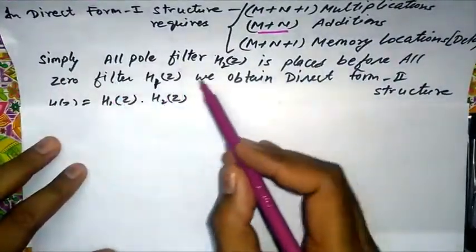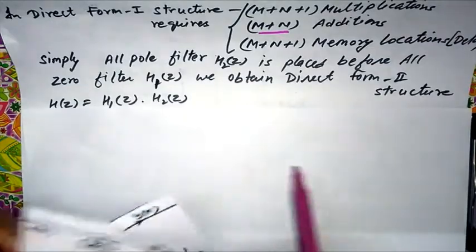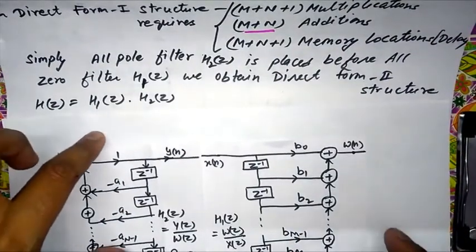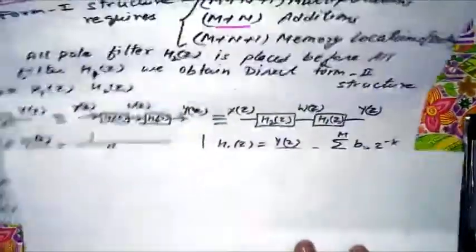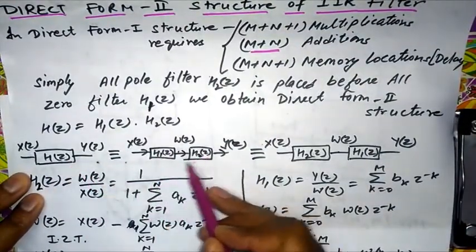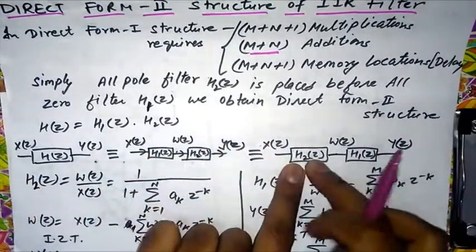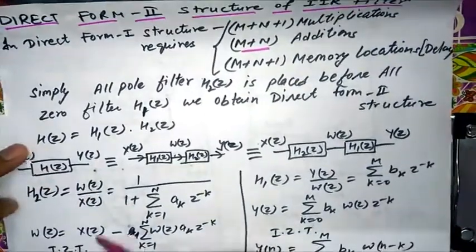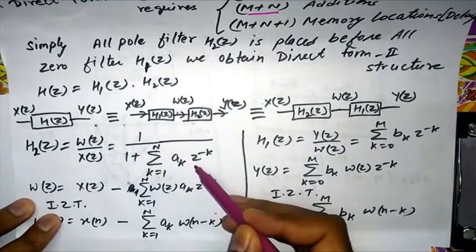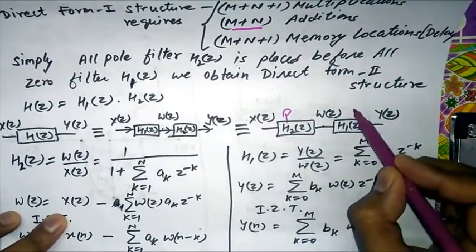Simply, the all-poles filter H2(z) is placed before the all-zeros filter H1(z) to obtain the Direct Form 2 structure, by mutual exchange of these structures. So H(z) is represented as H1(z) and H2(z) cascaded. We swap H2(z) and H1(z), so poles come first and zeros are second.